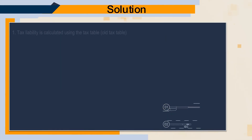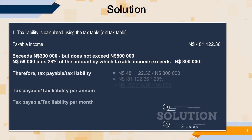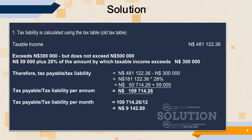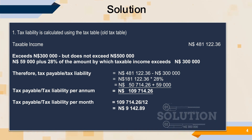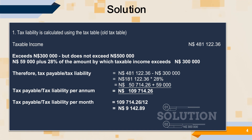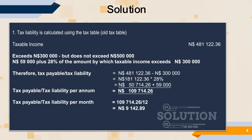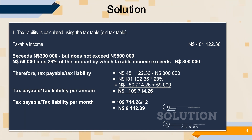Now that we know our taxable income, we go to our tax table — in this case the old tax table. On the left you will see the taxable amount, and on the right it says rates of tax. Your taxable amount is $481,122.36, and you need to check which bracket you fall into.